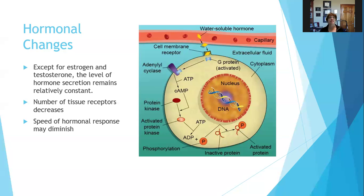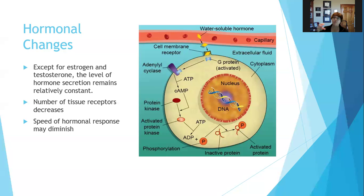Physiologically speaking, besides the sex hormones estrogen and testosterone, the level of our other hormone secretion remains relatively constant — we don't stop secreting other hormones. What does change is the number of tissue receptors, which decreases over time. So even though we have the same level of hormones, the speed of the hormone response diminishes because there aren't as many receptors for the hormone to bind to, resulting in a diminished response.